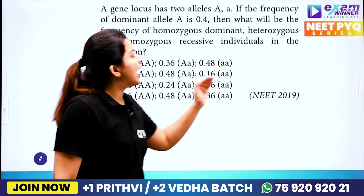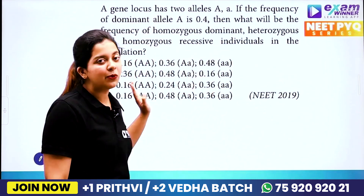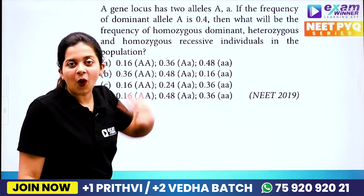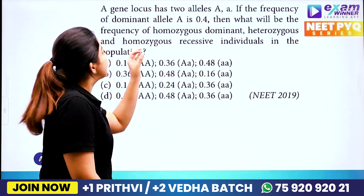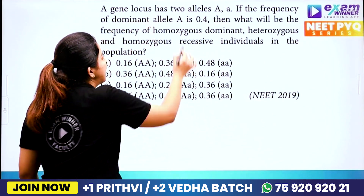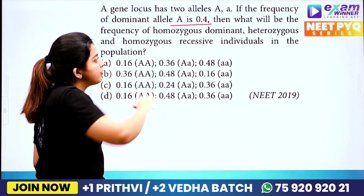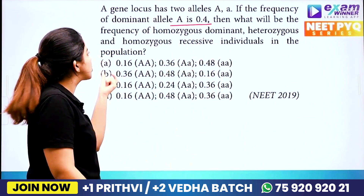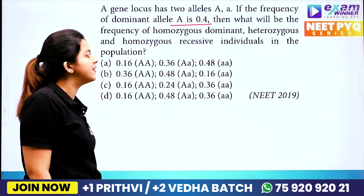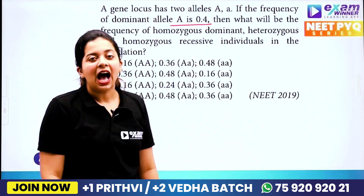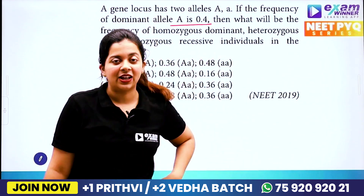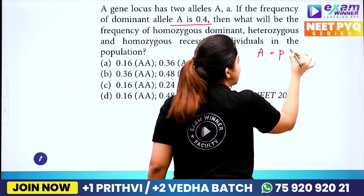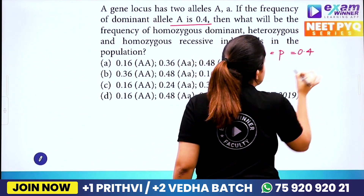A gene locus has two alleles, capital A and small a. We have a question from Hardy-Weinberg. If the frequency of the dominant allele A is 0.4, then what will be the frequency of homozygous dominant, heterozygous, and homozygous recessive individuals in the population? The frequency of capital A, that is P, equals 0.4.